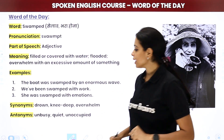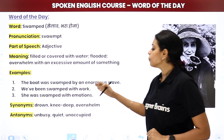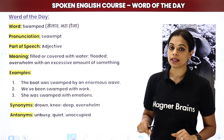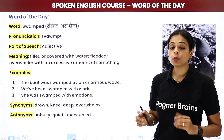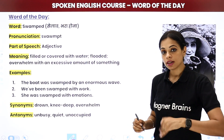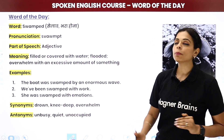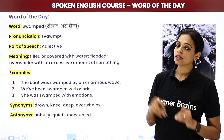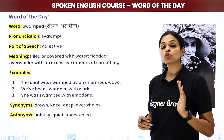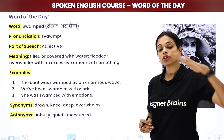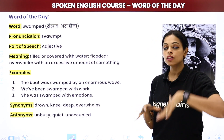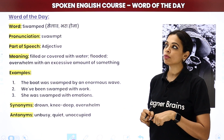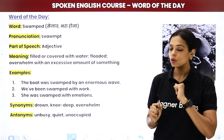Examples dekh lete hai. The boat was swamped by an enormous wave. Jo boat thi, wo dub gai — ek bohat badi si jo hai lehar, boat ke upar aayi aur boat dub gai. Isko bolte swamp, matlab isko bolte hai drown ho jana. Drown ko Hindi mein kya bolte hai — dhub jaana.